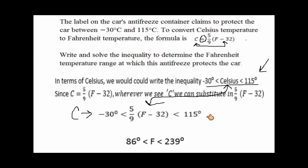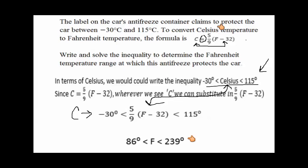Let's recap. There are two different ways to represent this value — we can show the Celsius comparison either using the formula for Celsius or written directly. We know we can interchange these because they represent the same thing; they're equal to each other. For Fahrenheit, we know the value has to be somewhere between 86 degrees and 239 degrees. I hope you found this video helpful. If you have any additional questions, please reach out to your instructor.